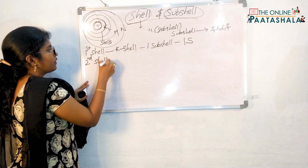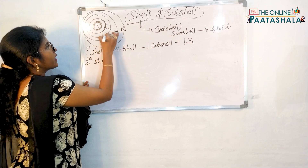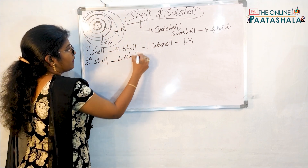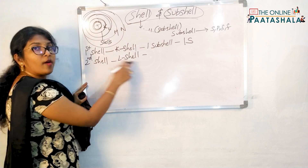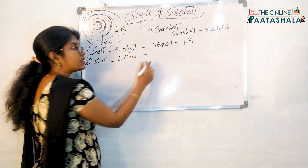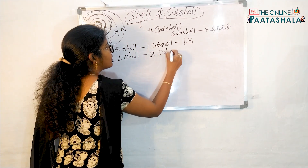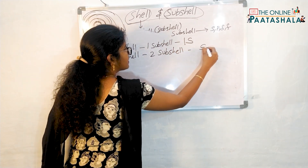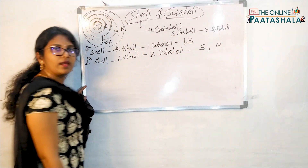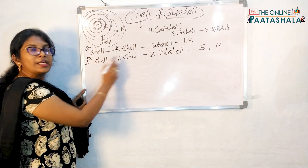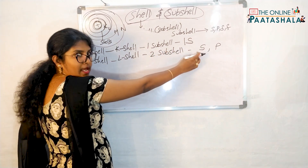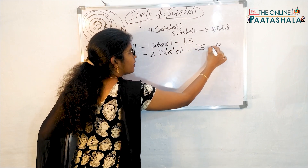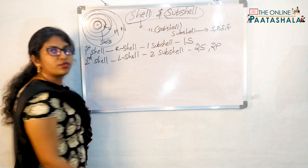Next, the second shell — that is the L shell. The second shell will have two subshells. What are those? S and P. So the second shell has two subshells, numbered as 2S and 2P.